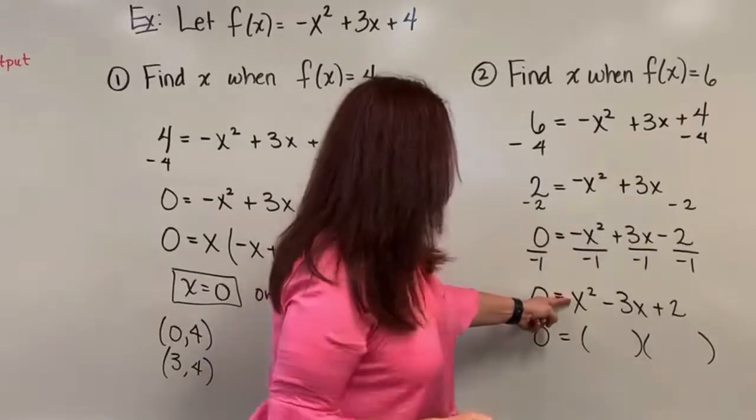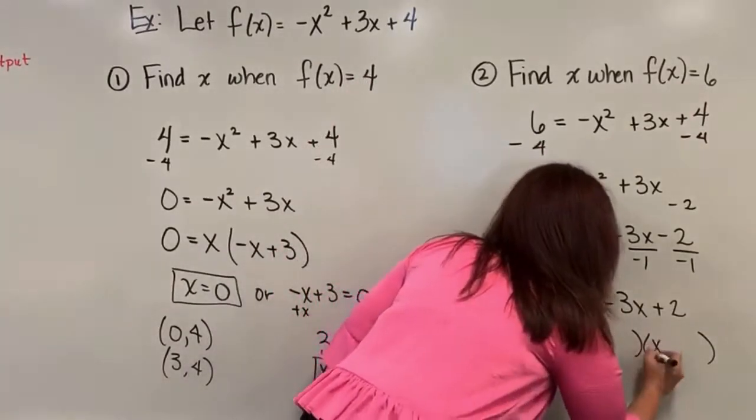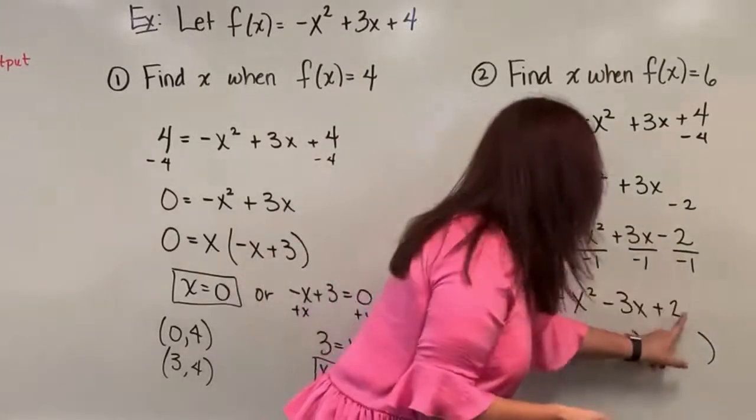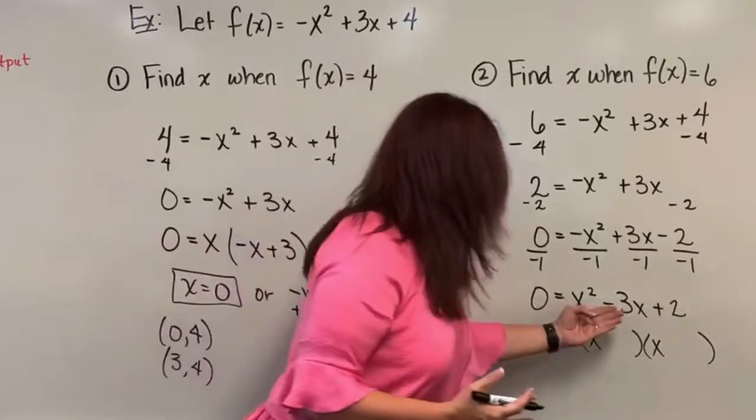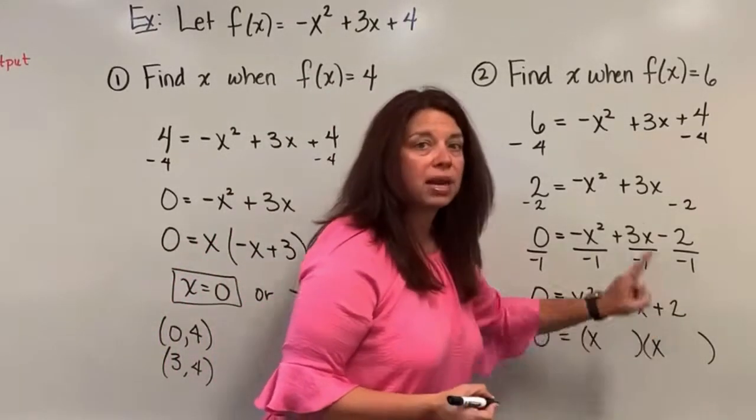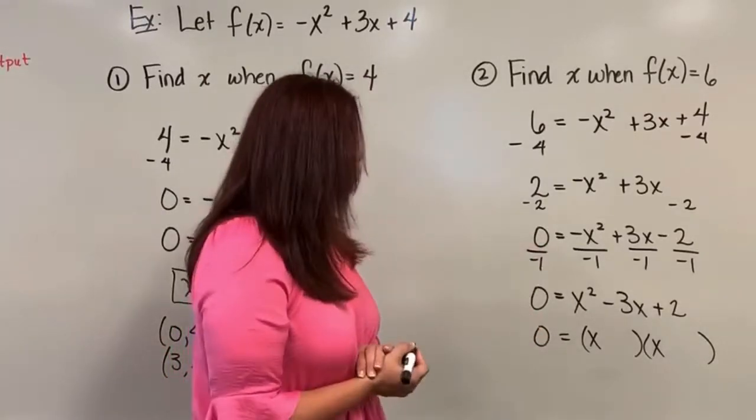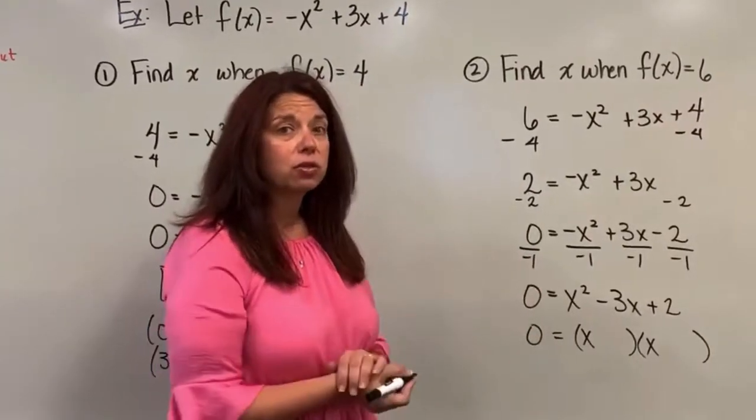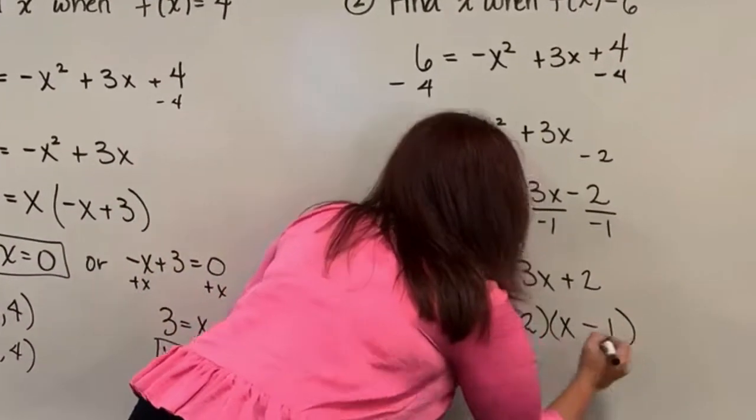Now what we can do is take this trinomial and factor it like we talked about into two binomials. And let's see, factors of x squared. Well, x times x gives us x squared. So we can use that here and here. Then we jump to the two and we say, what are factors of two that sum up to be a negative three? Be careful here. I need a positive two, but I need their factors to sum up to be a negative three. So we know two times one gives us a two. If we make them both negative, let's see if that works. And put them here.